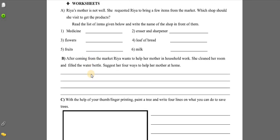Question B: after coming from the market, Rhea wants to help her mother with household work because her mother is sick and not able to do the work. Rhea, the responsible girl, has already cleaned her room and filled the water bottle. Now, what else can you suggest — four ways — so that she can help her mother at home? I know you all keep helping your mother during tough times, so please suggest four different ways which you follow.